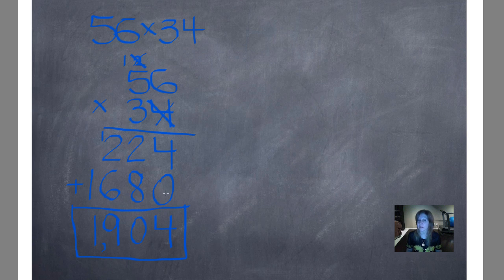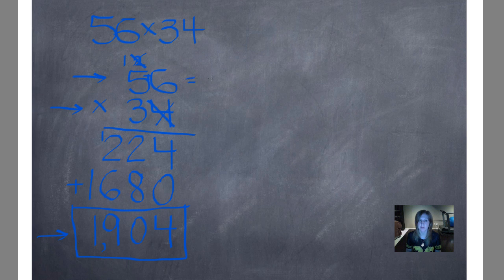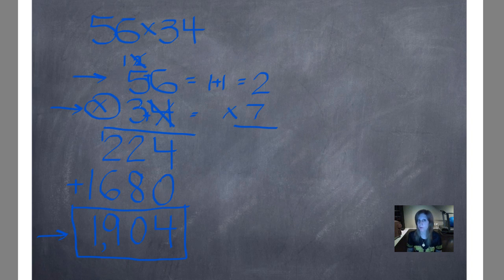Now we're going to use our digital root checking to see how we did. We're only going to find the digital root for the top number, the bottom number, and our final answer. So I'll add together 5 plus 6 equals 11. We can't have a two-digit number, so we add those: 1 plus 1 equals 2. Now 3 plus 4 equals 7 — that's already a single digit. Because we're multiplying, we multiply the digital roots: 7 times 2 is 14. Can't have a two-digit number, so 1 plus 4 equals 5. Five is our magic number.